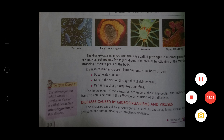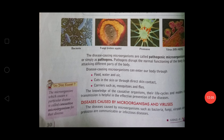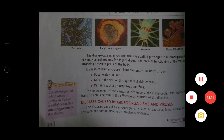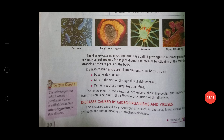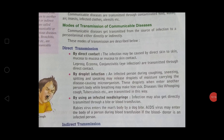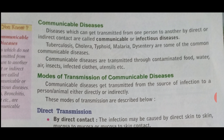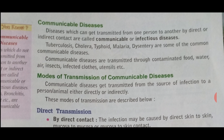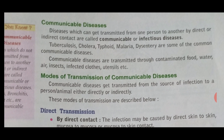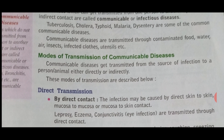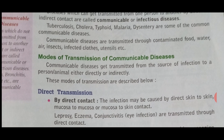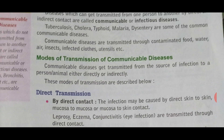Now we are going to discuss diseases caused by microorganisms and viruses. First, I am going to talk about communicable diseases. These diseases are easily transmitted from one person to another through direct or indirect contact. Examples include tuberculosis, cholera, typhoid, malaria and dysentery — some of the most common communicable diseases.